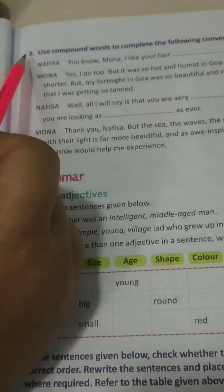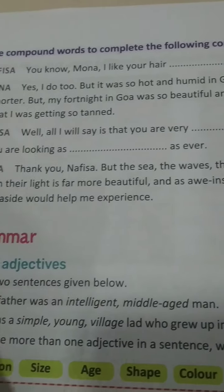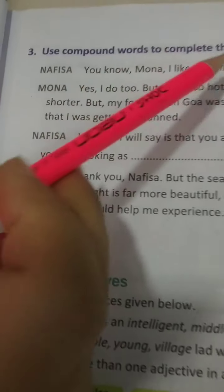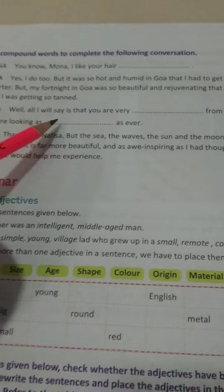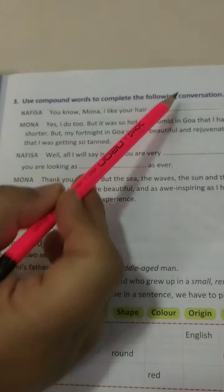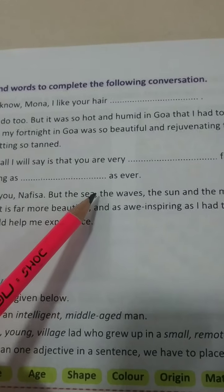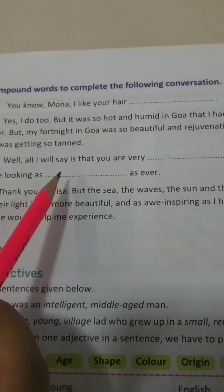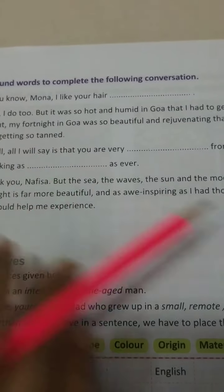Come to page number 19, see Question 3: use compound words to complete the following conversation. There is a conversation between two girls, Nafisa and Mona, and three blanks are there. Just go through the conversation very well and add three compound words which suit the given conversation. I'll share the answer sheet of all these questions tomorrow. But right now, first of all, you just try it.